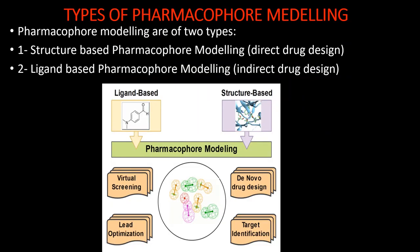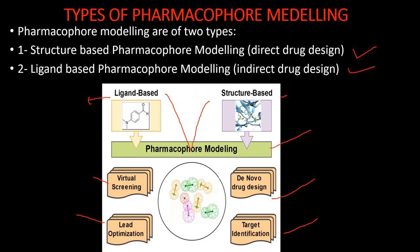There are two types of pharmacophore modeling: one is structure-based pharmacophore modeling, which is direct drug design, and the second is ligand-based pharmacophore modeling, which is indirect drug design. In structure-based design we look at the target structure directly; in ligand-based design we modify the drug molecule. Together, both play a role in pharmacophore modeling — identifying the target, virtual screening, and lead optimization.